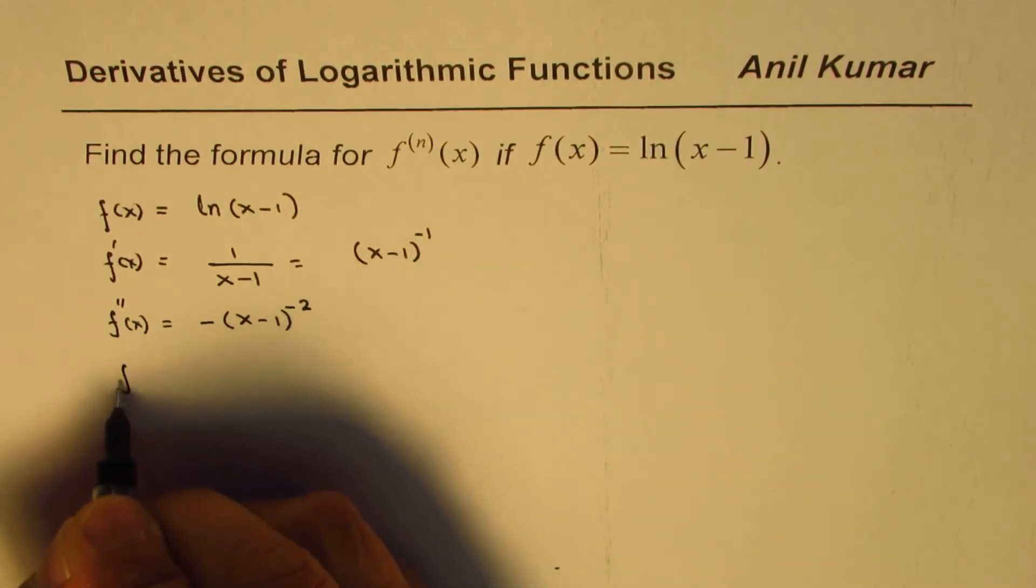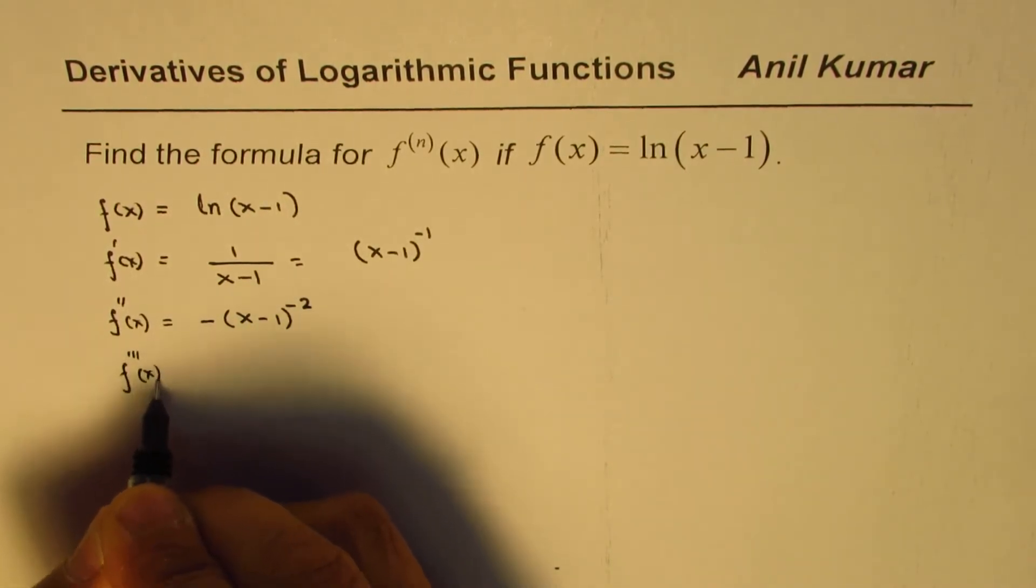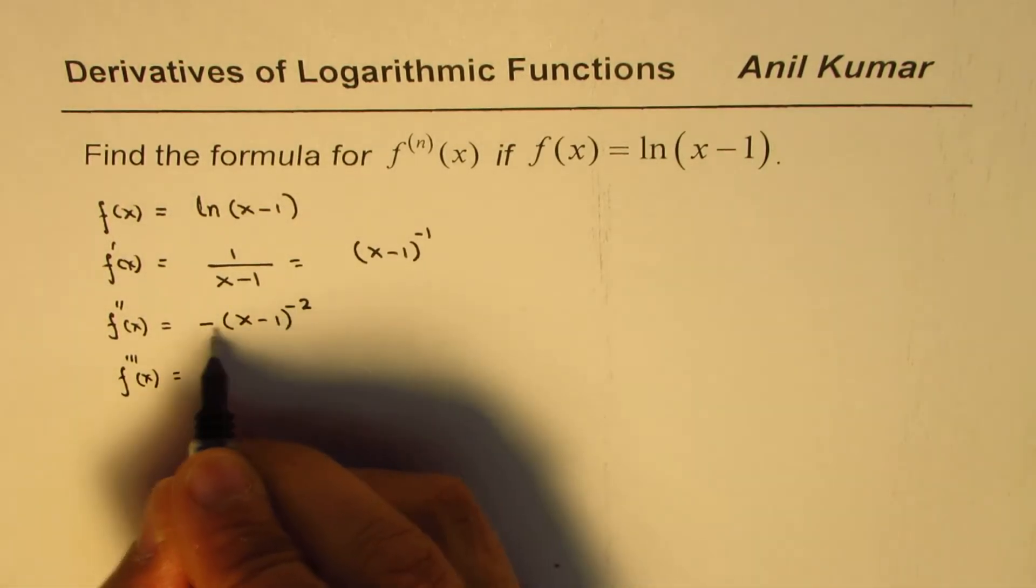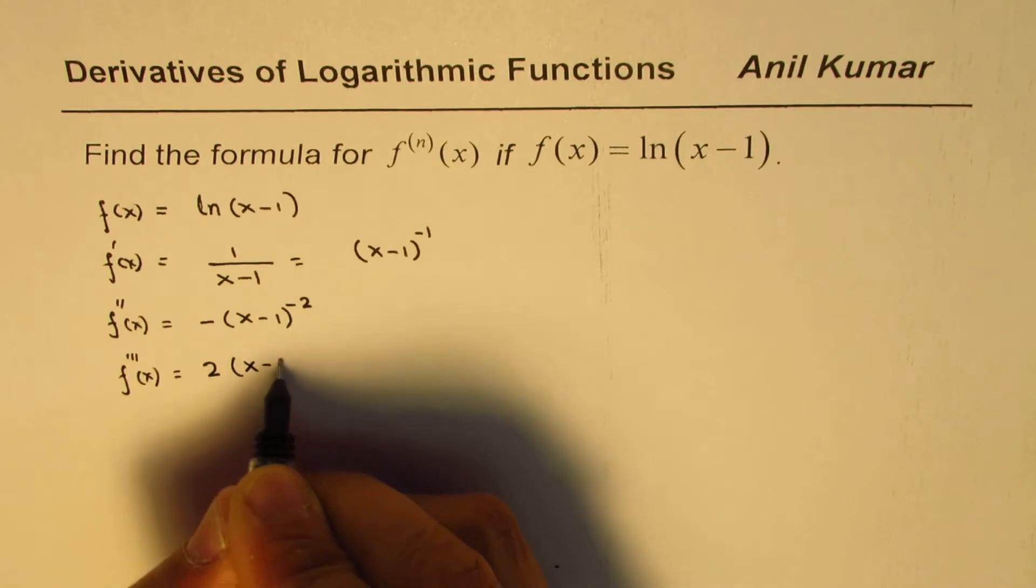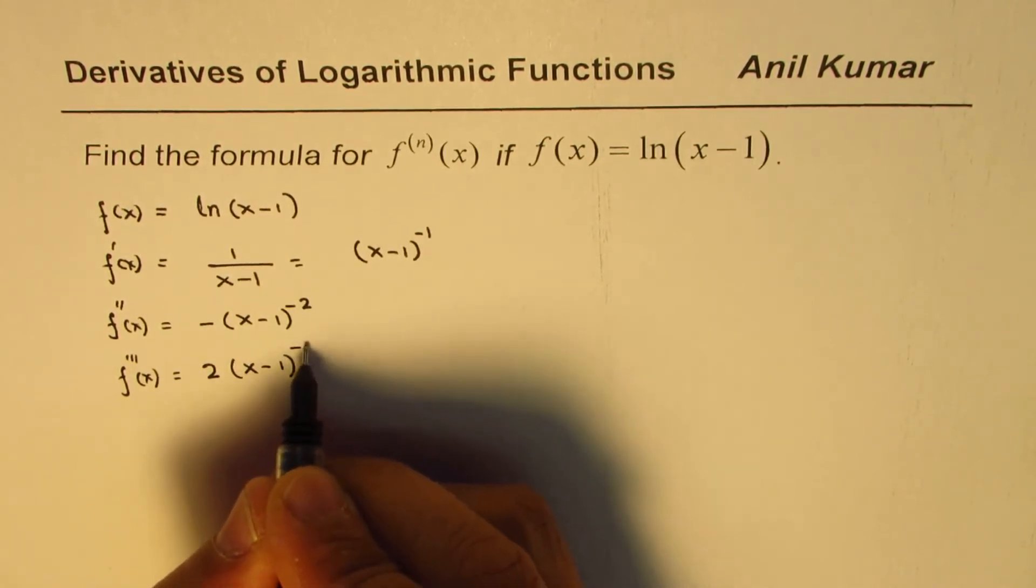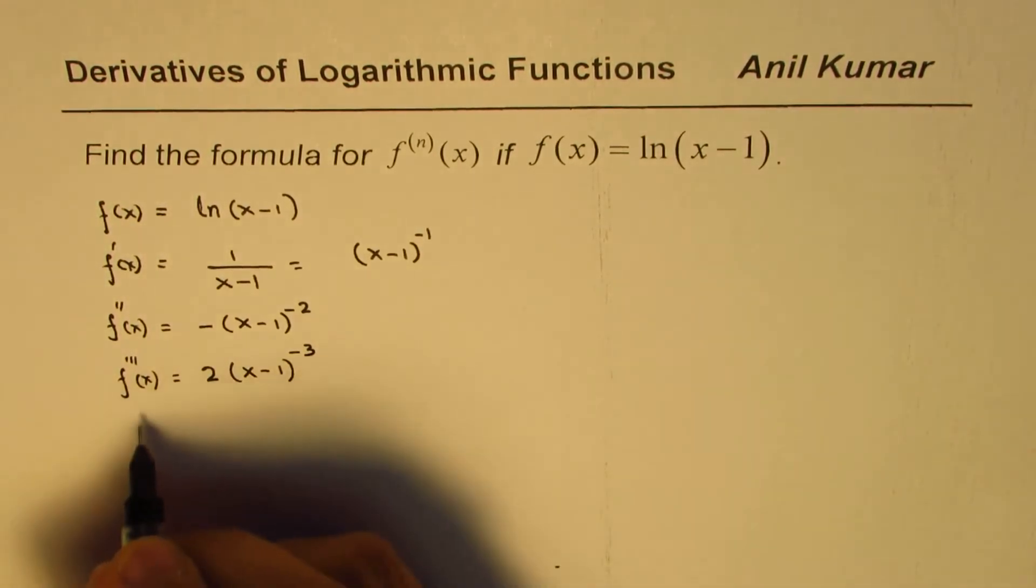Now the third derivative for this function will be, minus and minus becomes positive, so it is +2(x-1)^(-3).